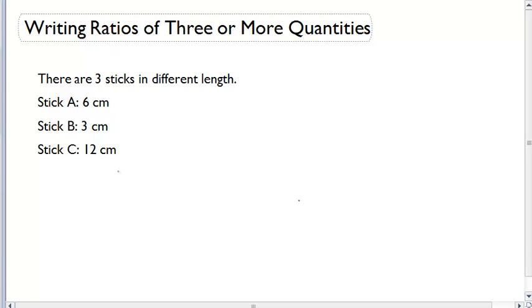We've done before comparing two of these quantities. For example, if I wanted to write a ratio that compared Stick A to Stick B, I could write the ratio of A to B would be 6 to 3.